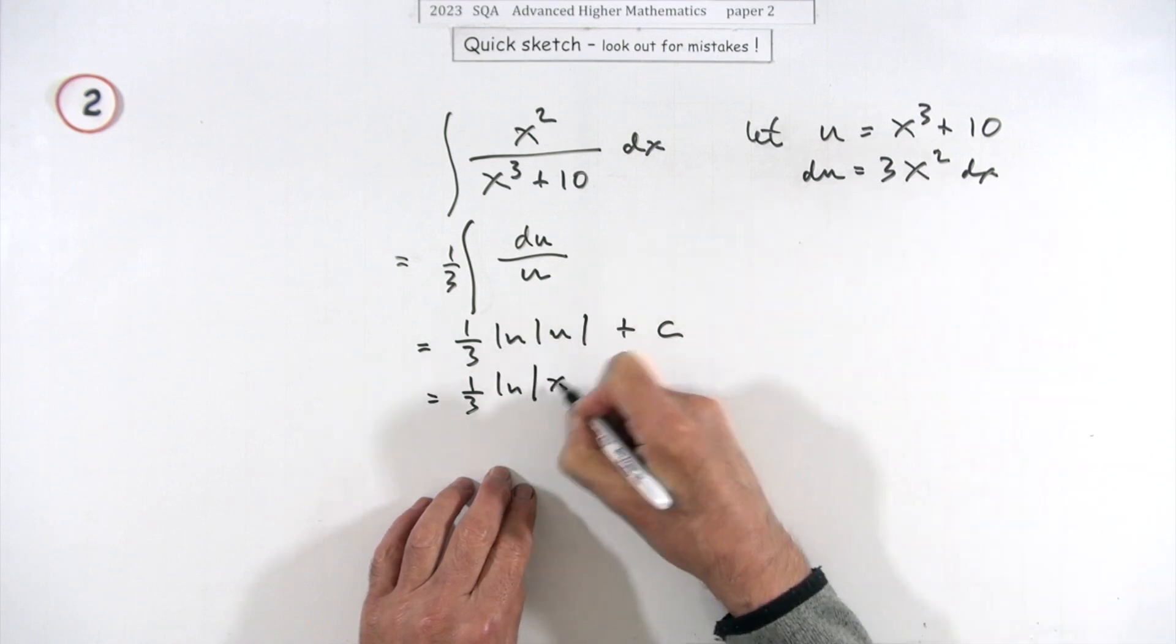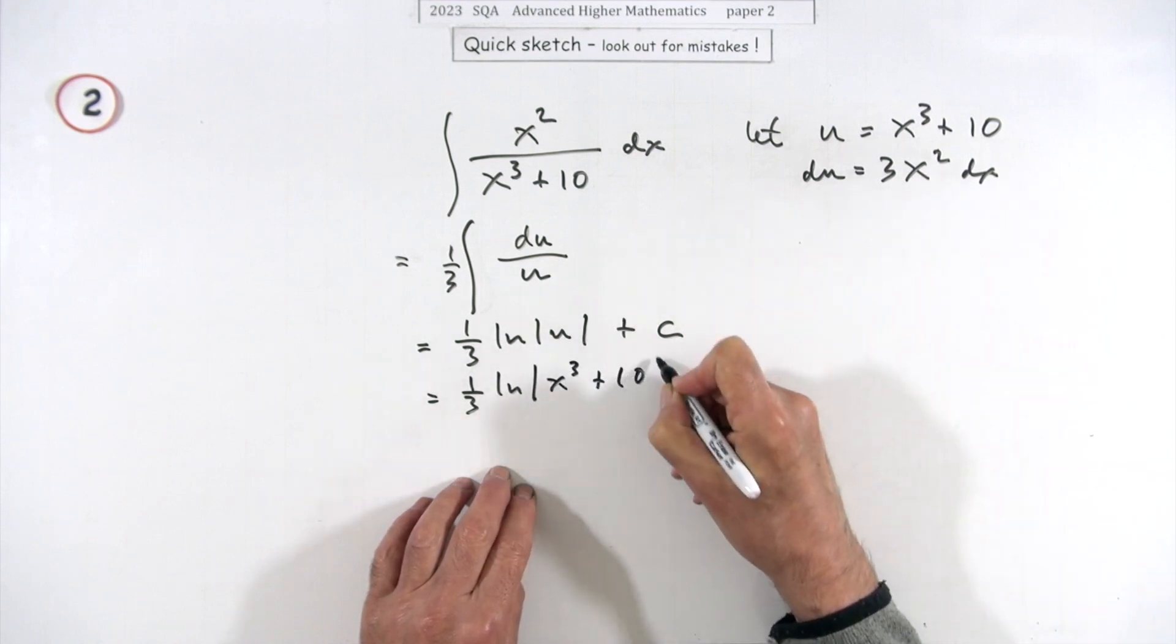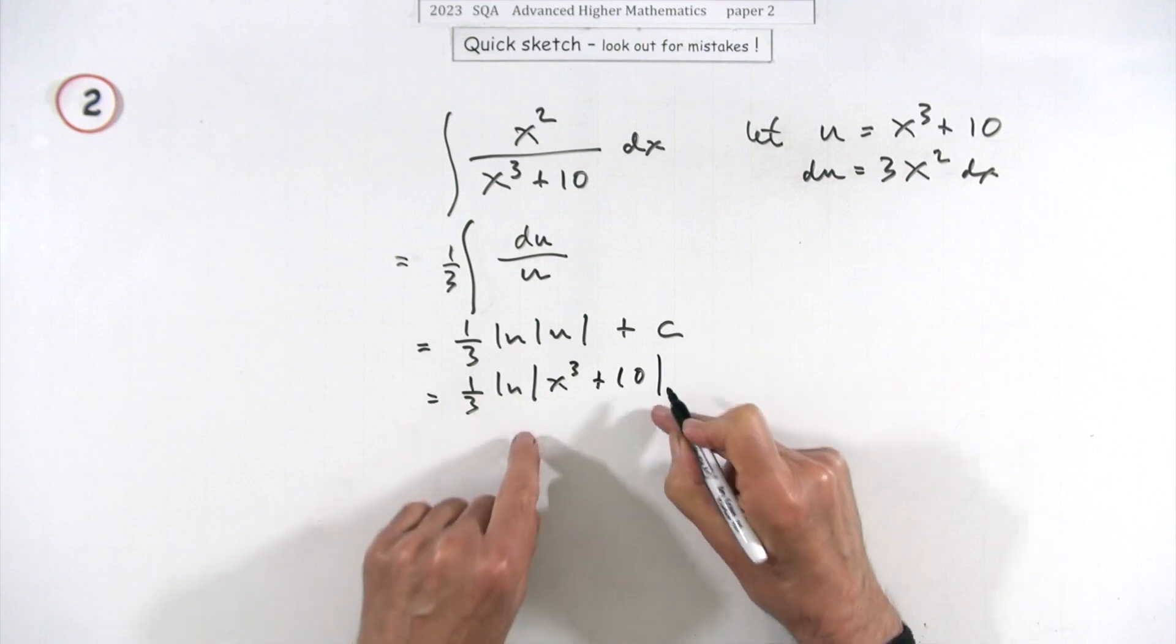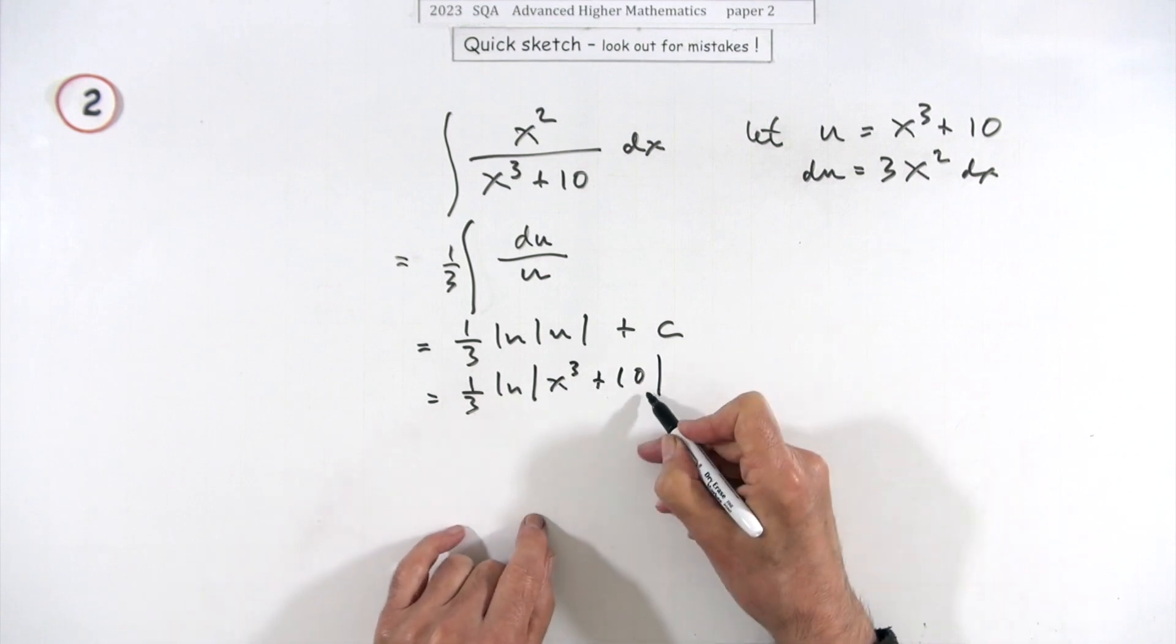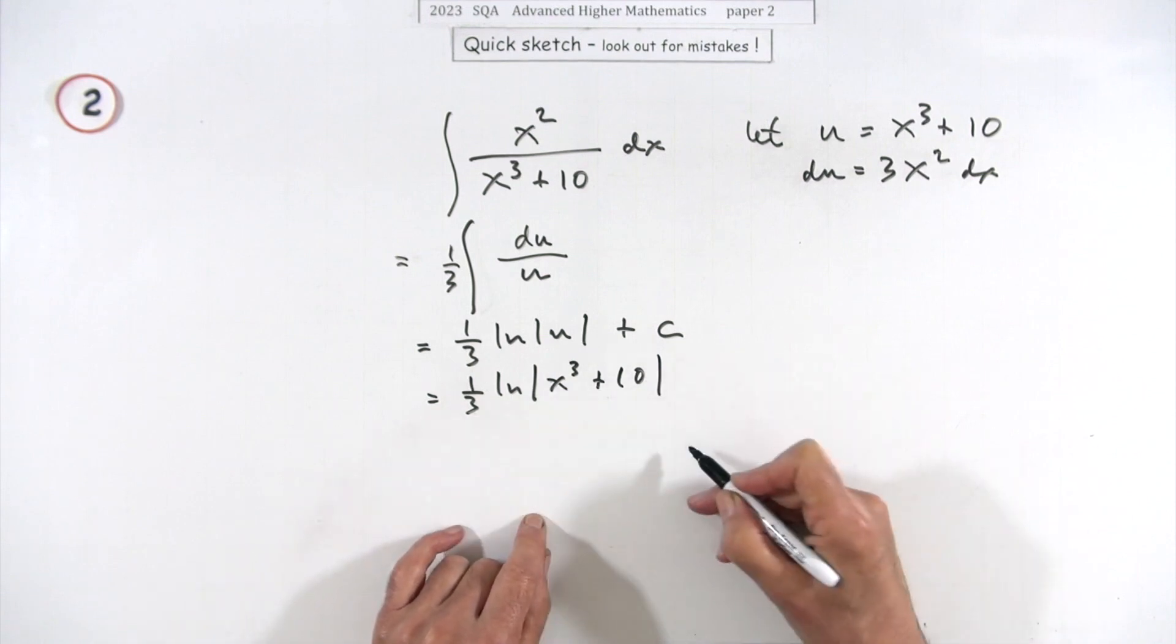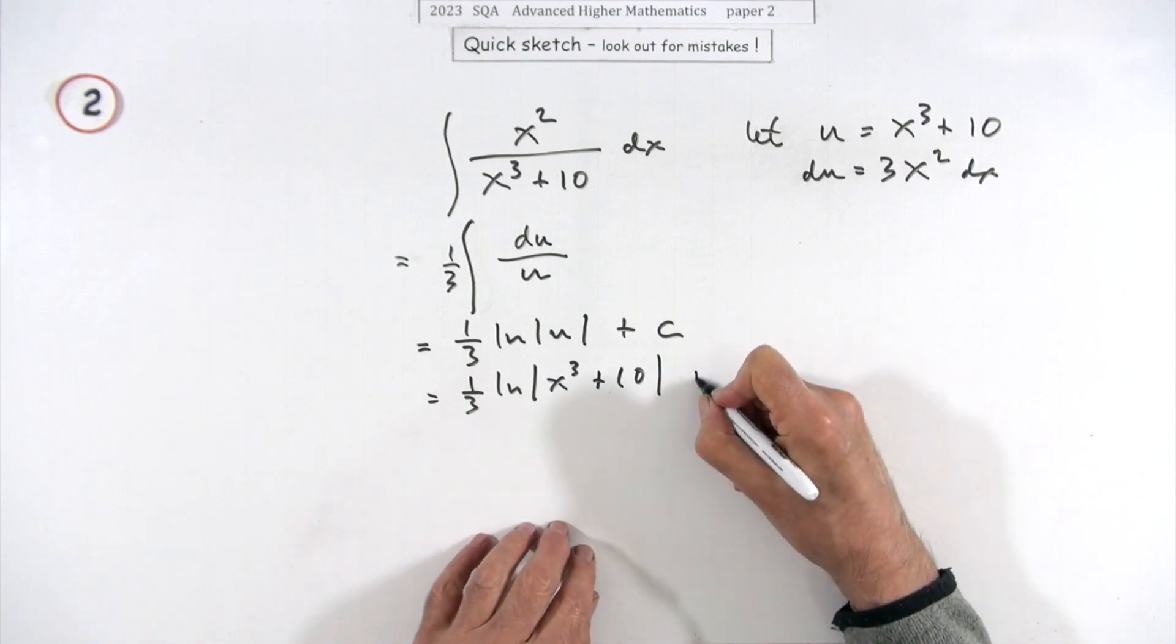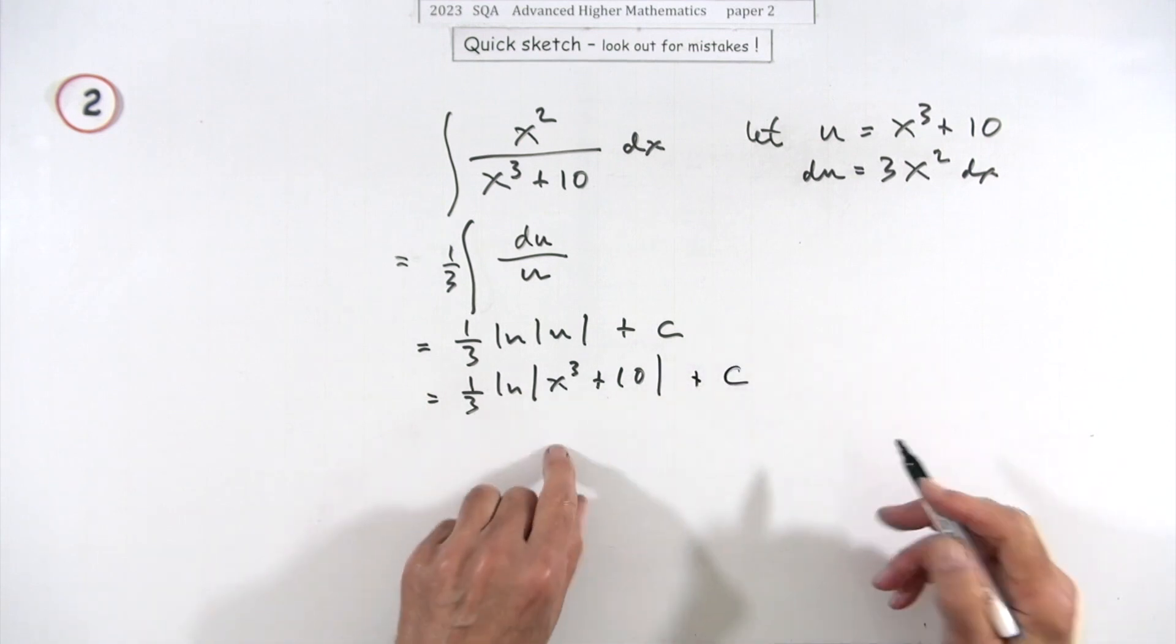x³ plus 10. And you'll need to have the modulus around that because that could go zero or negative with a cube in it, so you'll need the modulus bars around that log. And that's about it.